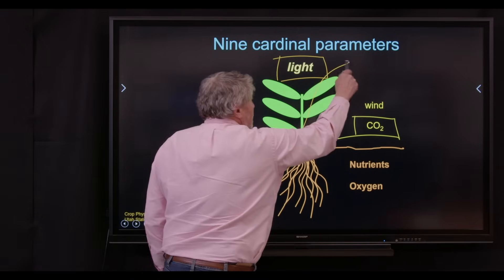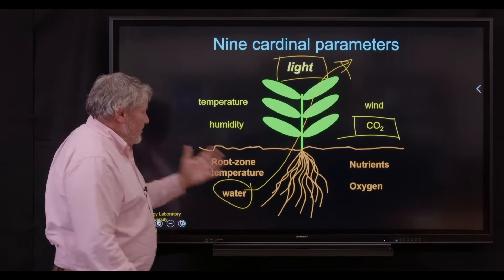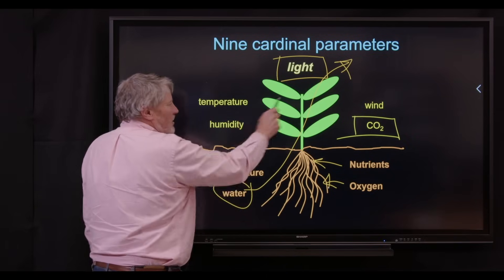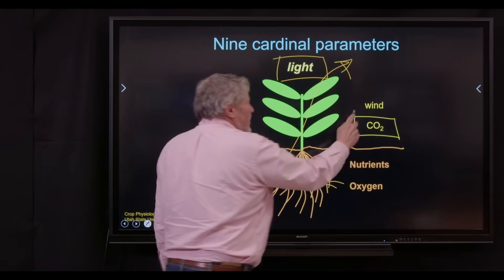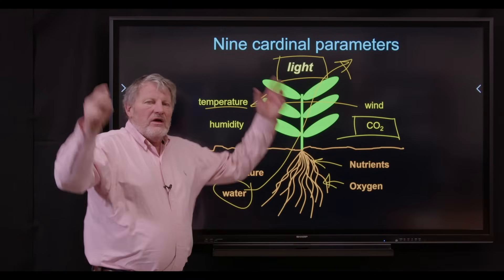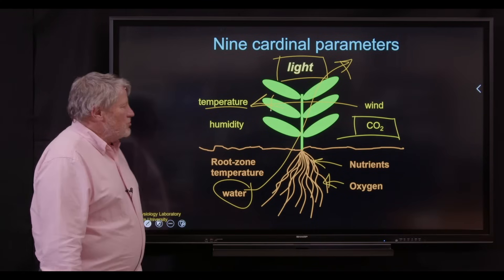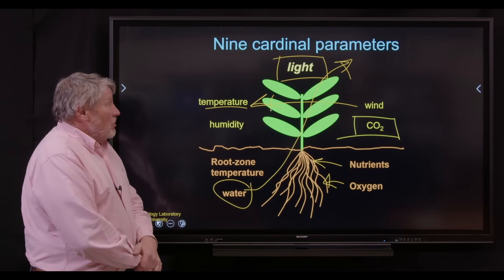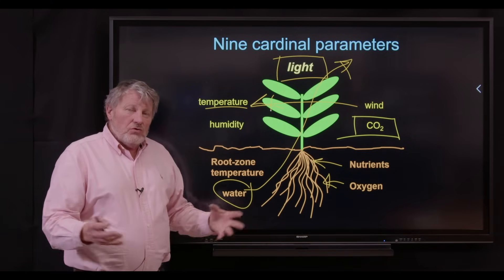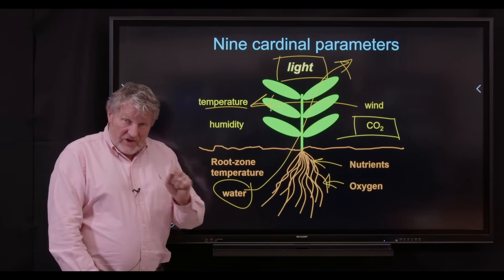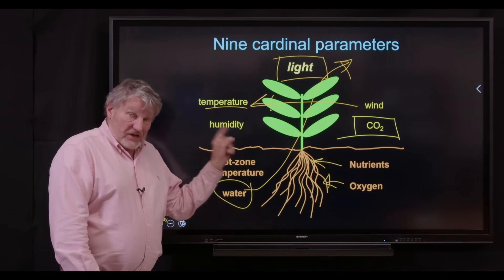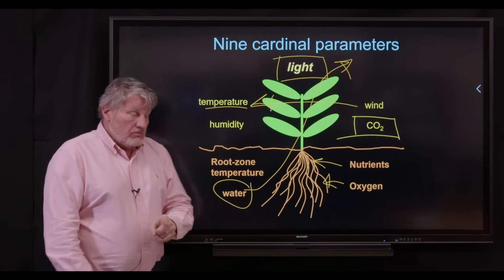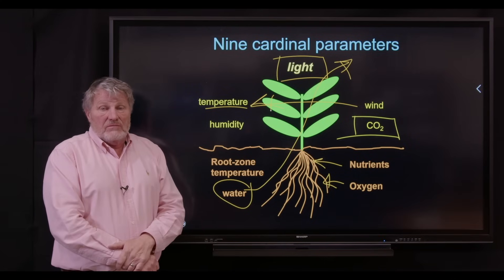But when you put all that light in, the transpiration rate goes up. So you need more water. You need more nutrients. Respiration in the root zone goes up. You need more oxygen. The optimum temperature is higher. You need more wind blowing through the crop to help cool it. Light drives everything. It's a huge factor. And in this lab, we spent a lot of time studying light. So that's a concept of all the things you can do with indoor production to elevate yield. There are expensive inputs, particularly the light. But when the product is high value, all of this is economically justified.